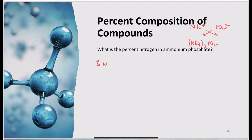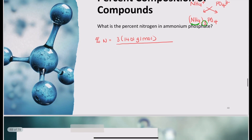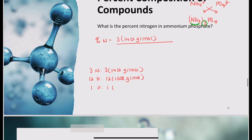I want to know the percent nitrogen in (NH4)3PO4. The three means three of these groups, so that's three nitrogens and twelve hydrogens. So: three times the mass of nitrogen (14.01 g/mol), divided by the total mass of the compound. The total adds up: 3×14.01 + 12×1.008 + 1×30.97 + 4×16.00 = 149.1 grams per mole.